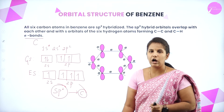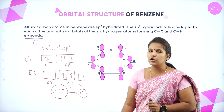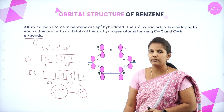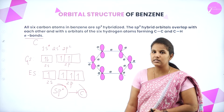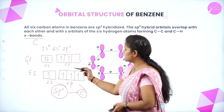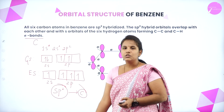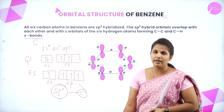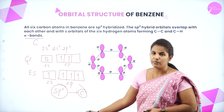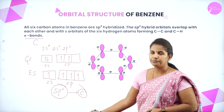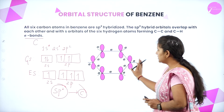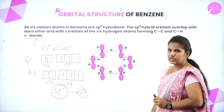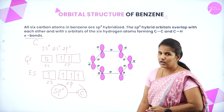In ground state, 2s has 2 electrons and 2p has 2 electrons. In the excited state, one electron from 2s shifts to 2p. This forms sp2 hybridization. The remaining unpaired electrons in 2p overlap to form pi bonds. This is the actual orbital structure of benzene, showing how the carbon achieves sp2 hybridization and forms pi bonds with adjacent atoms.